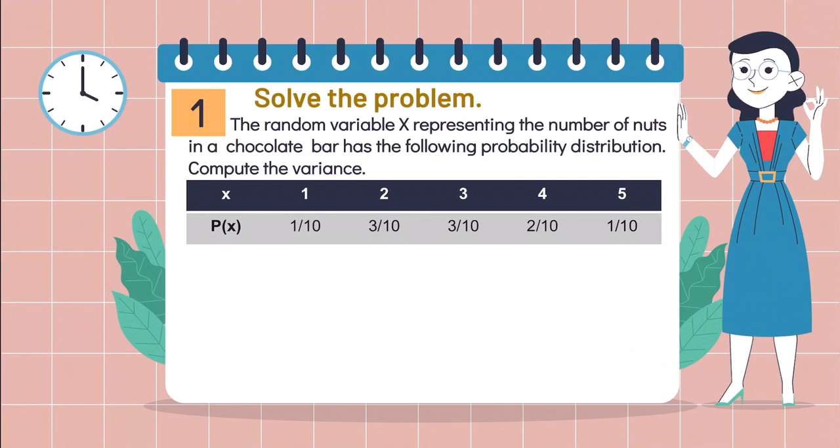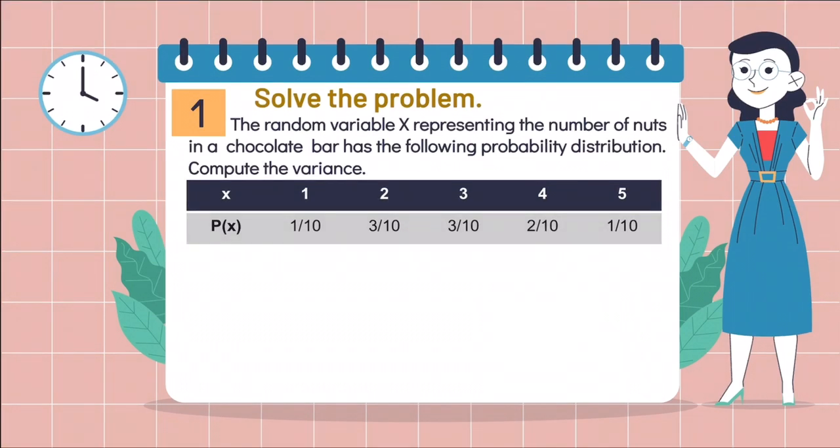By looking at the table of the probability distribution, we can depict that there are 5 outcomes, which are 1 to 5, and their given probability, within 0 to 1, has a summation which is equal to 1. According to the properties of discrete probability distribution, since we are asked to find the variance, we are going to find first the mean of this probability distribution.